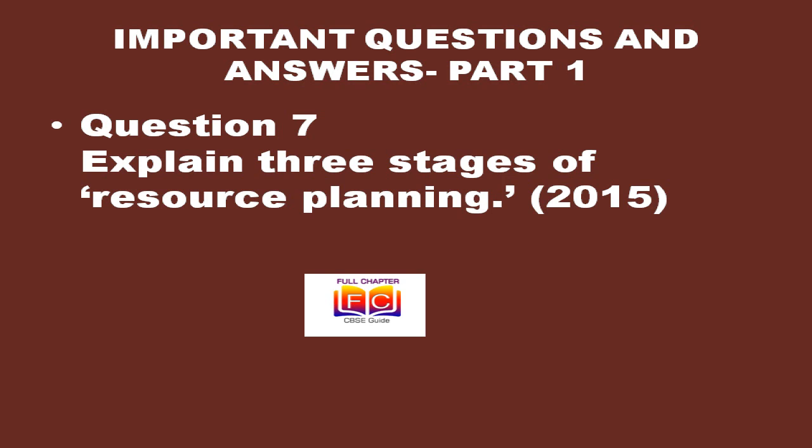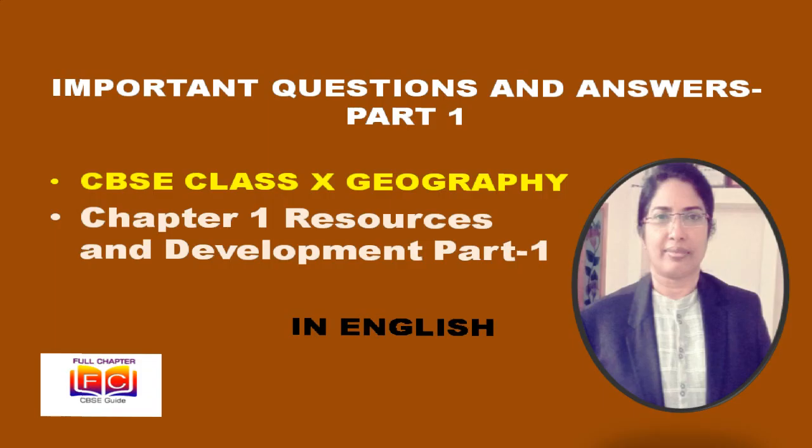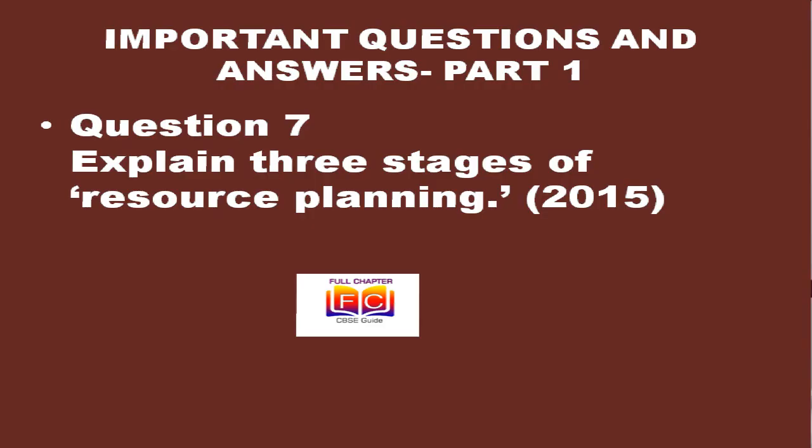Question 7: Explain three stages of resource planning. Stage one: identification and inventory of resources across the regions of the country — this involves surveying, mapping, and qualitative and quantitative estimation and measurement of resources. Stage two: evolving a planning structure endowed with appropriate technology, skill, and institutional setup for implementing resource development. Stage three: matching the resource development plans with overall national development.